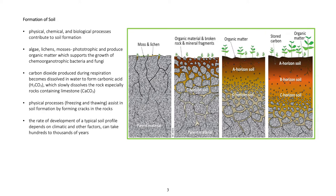Formation of soil. Physical, chemical, and biological processes contribute to soil formation. Algae, lichens, mosses are phototrophic and produce organic matter which supports the growth of chemo-organotrophic bacteria and fungi. Carbon dioxide produced during respiration becomes dissolved in water to form carbonic acid, which slowly dissolves the rock, especially rocks containing limestone.